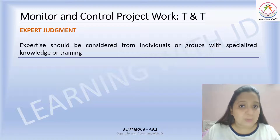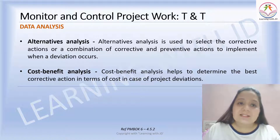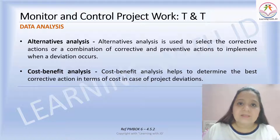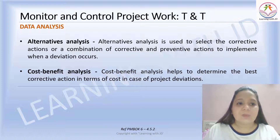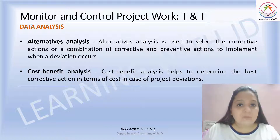Now let's see the tools and techniques. The first is expert judgment — experts can be individuals or groups with specialized knowledge or training. You may also use data analysis techniques. Alternative analysis is used to select corrective or a combination of corrective and preventive actions to implement when a deviation occurs in your project scope, cost, or schedule. Cost-benefit analysis helps determine the best corrective action in terms of cost when there is a cost deviation in the project.